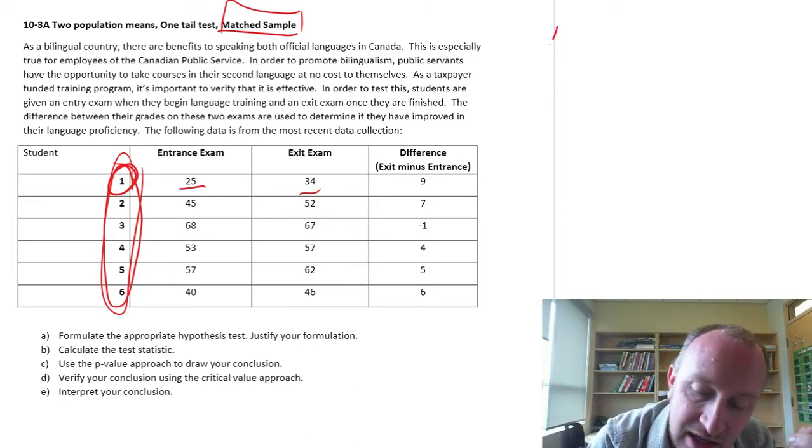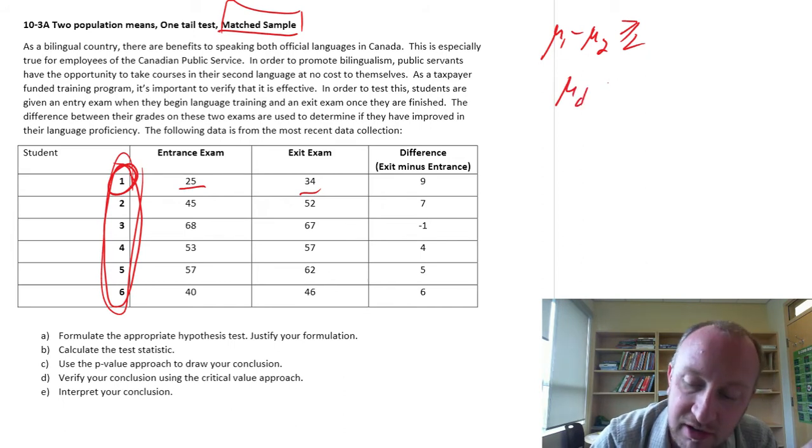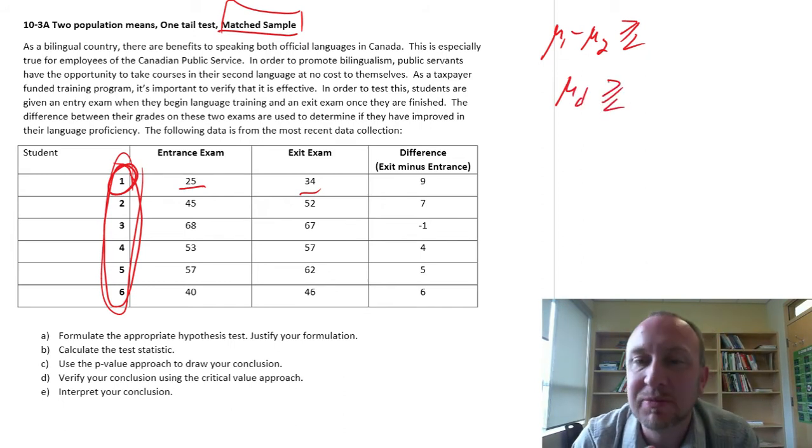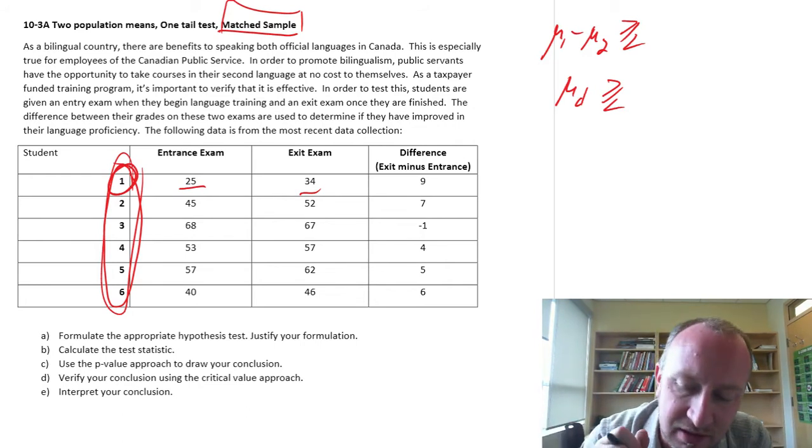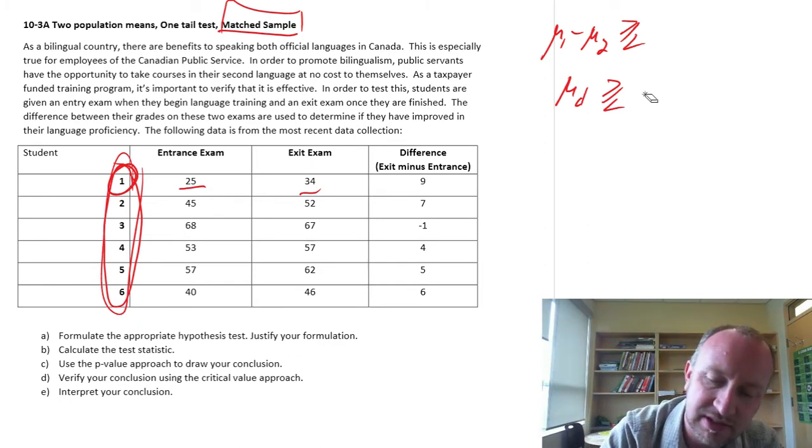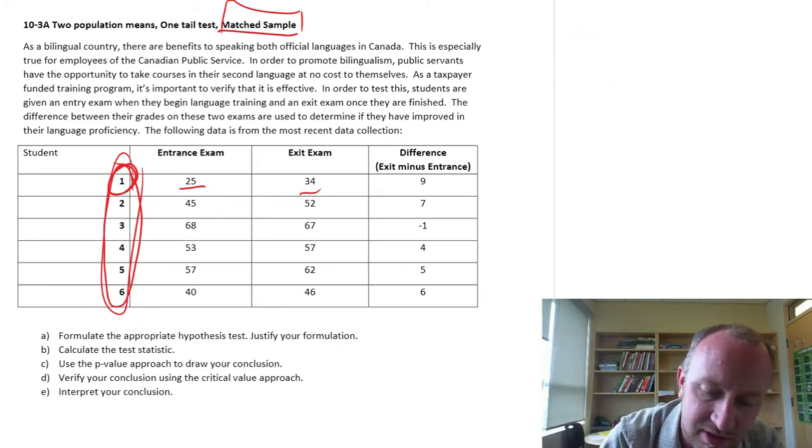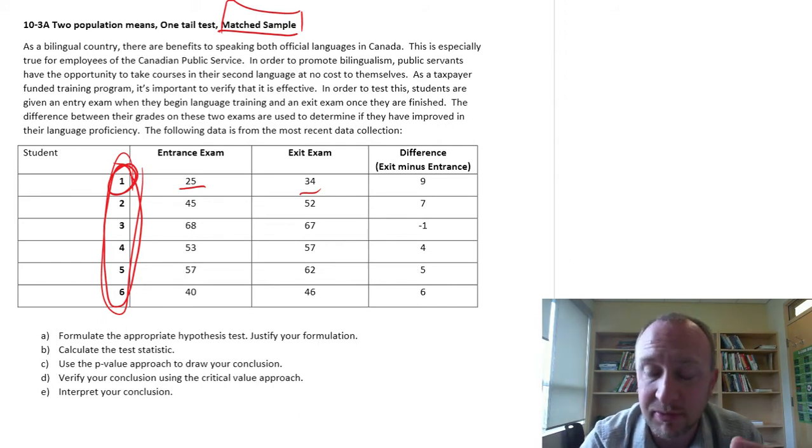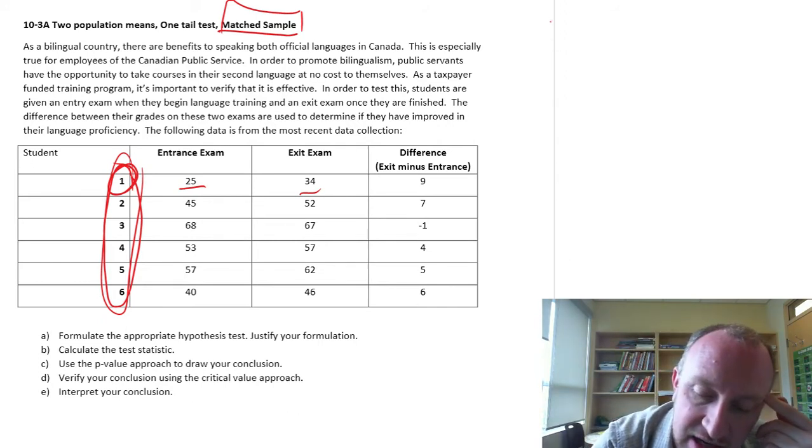Now what we do with our test, is instead of calculating whether or not there's a difference in means, now we're testing the mean difference. So it's the difference between a difference in means and a mean difference. Very subtle difference in the terminology and the wording. So let's set up our test.